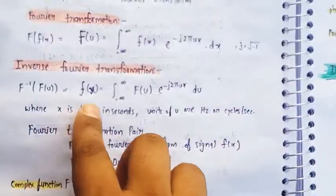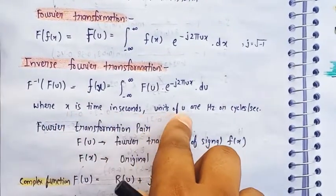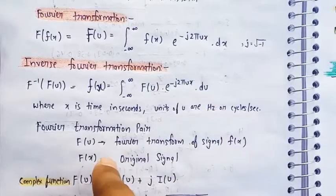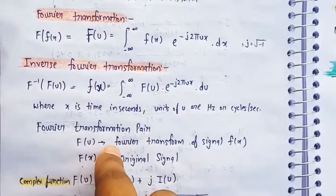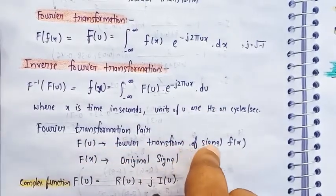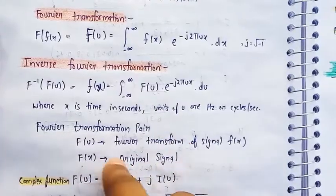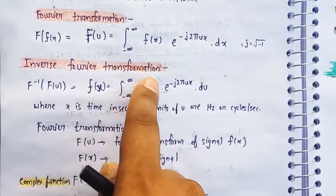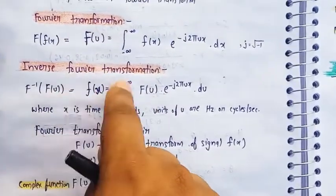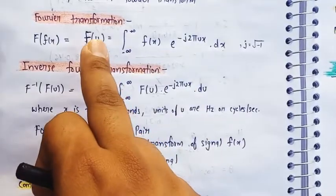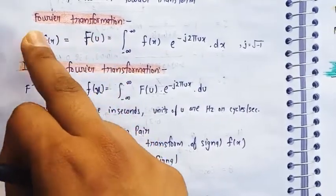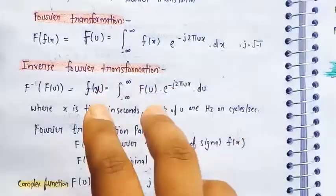Where x is the time in seconds and the unit of u is Hertz or cycles per second. A Fourier transformation pair: F(u) is the Fourier transformation of the signal f(x), and f(x) is the original signal. In inverse Fourier transformation, we are talking about the original signal, whereas in Fourier transformation we are talking about the signal f(x).